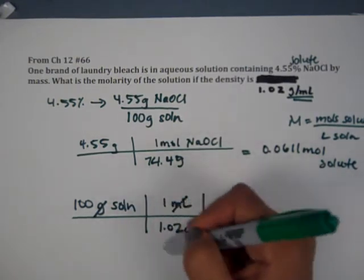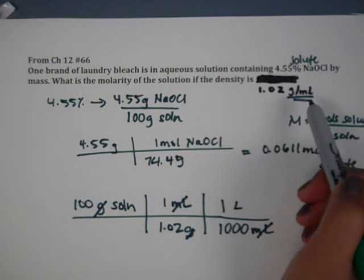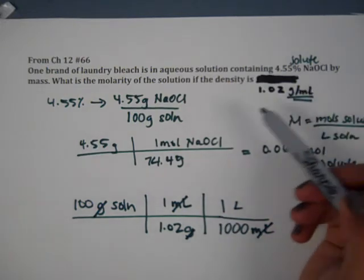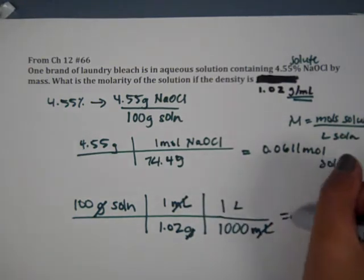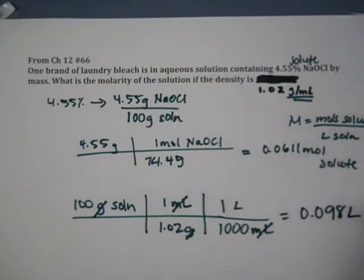So the key is to use the density, the conversion factors. You are working grams per milliliters. And if there's different density units, you have to put those in too. So when you finish that out, that's about 0.098 liters of solution.